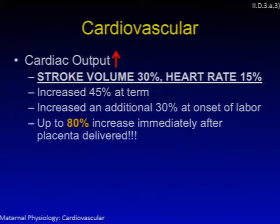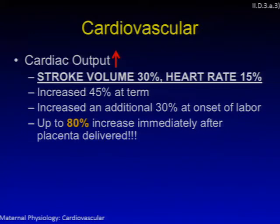Cardiac output is increased in pregnancy, mostly by virtue of an increase in stroke volume by 30%. There is an increase in heart rate as well, but usually only by 15%. This increase is up to 45% at term, and when onset of labor occurs it goes up by an additional 30%. The most significant increase in cardiac output occurs immediately after the placenta is delivered — the third stage of labor — where it goes up by up to 80%.